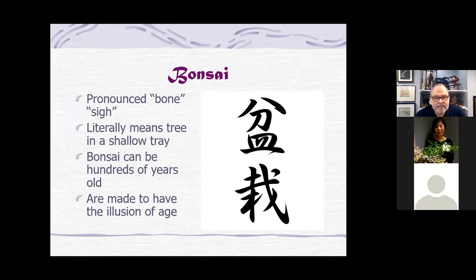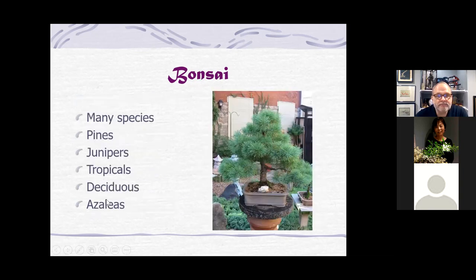Well, thank you. Thanks for having me. I'm honored to be asked to join you this evening. I'm Evan Luce. I'm the current first vice president and program chairman of the Bonsai Society of Greater Cincinnati. I'm also the past president. I've held all the offices of the Bonsai Society of Greater Cincinnati. I'm current vice president of the Mid-America Bonsai Alliance, and as previously stated, I have studied the art of bonsai for quite some time. Bonsai literally means tree in a shallow tray. They can be hundreds of years old, or they can be made to look hundreds of years old, but they really are not. The trick is to make them have the illusion of age.